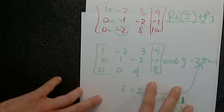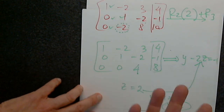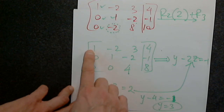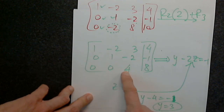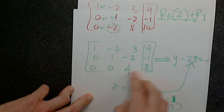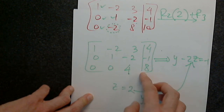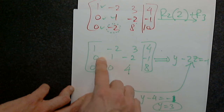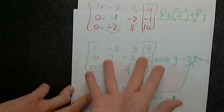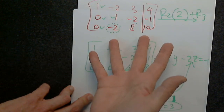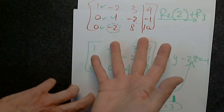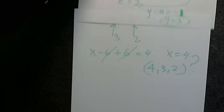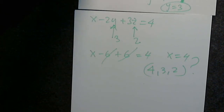With Gaussian elimination with back substitution, you get the 1 when you divide by 4, you only need the zeros below the diagonal, but then you have to go back and create a new system. If it's better for you, it's better for me.